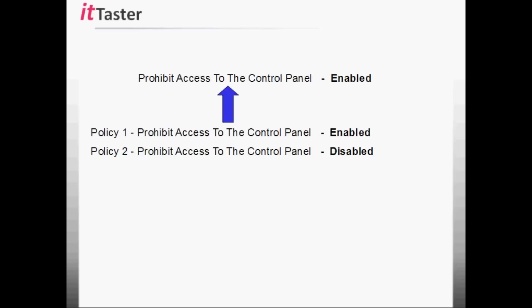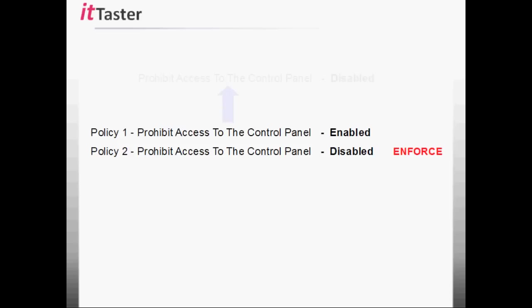There is a configuration setting that adds a little extra complication — a whole GPO can be configured as enforced. This means the individual settings in the policy are fixed in place and cannot be changed by policies processed after it. In this example, policy 2 is processed first and the GPO is enforced, with prohibit access to the control panel set to disabled. Policy 1 is processed last and has prohibit access to the control panel enabled, but because policy 2 is enforced, policy 2 wins. The policy setting applied is prohibit access to the control panel disabled.